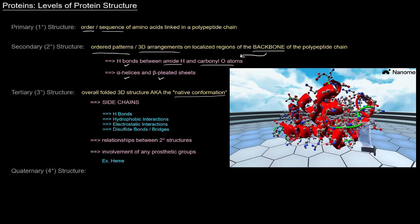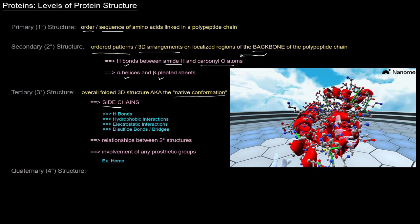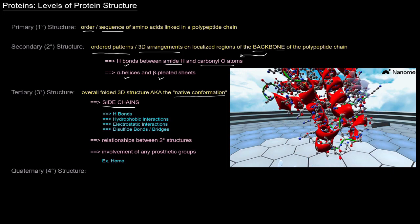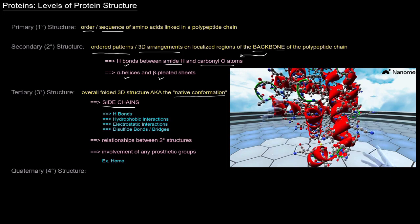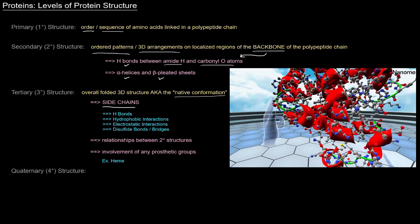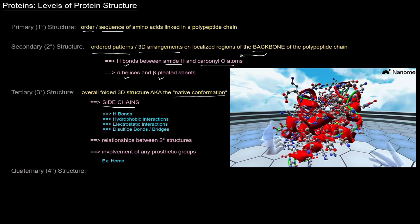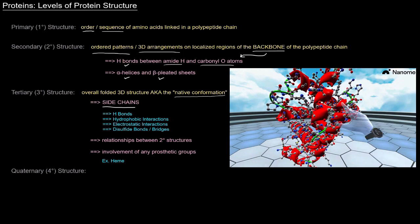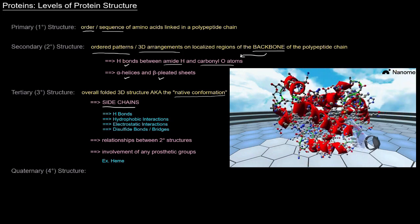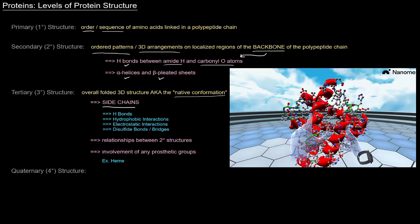So, interactions between the side chains of the amino acids. Because when a polypeptide folds, it's inevitable that side chains will be interacting with each other. So, what are the interactions that are there and what's going to be holding this 3D structure together?